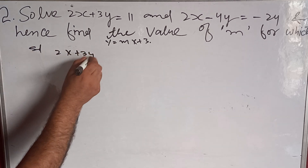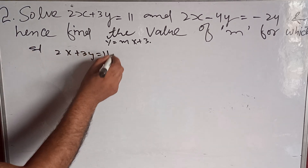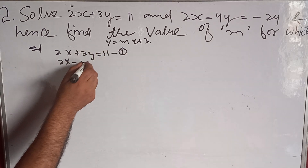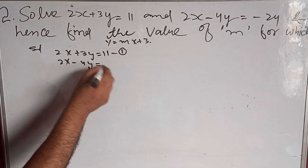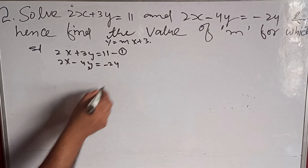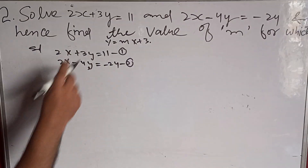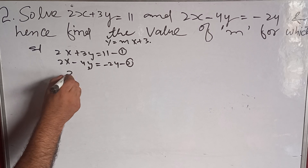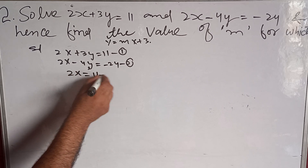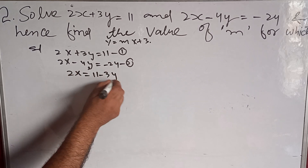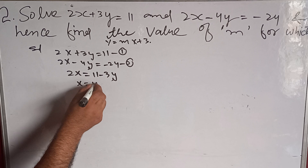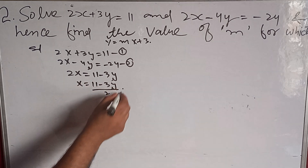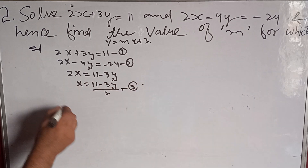We have our first equation: 2x plus 3y is equal to 11. We have our second equation: 2x minus 4y is equal to minus 24. From the first equation, 2x is equal to 11 minus 3y, so x is equal to 11 minus 3y divided by 2. This is our third equation.